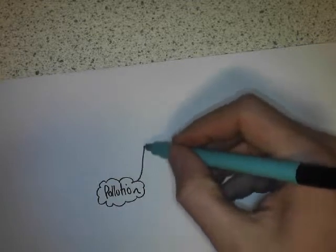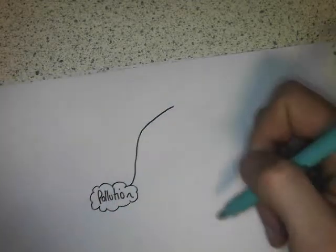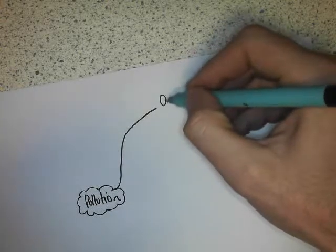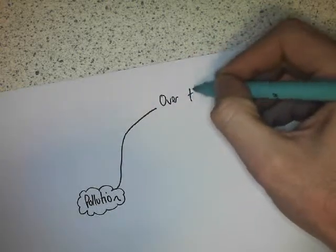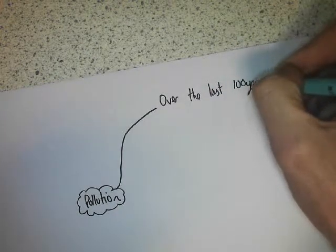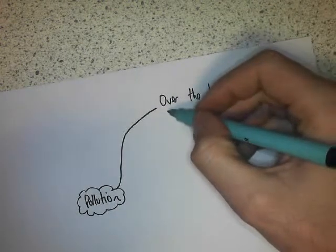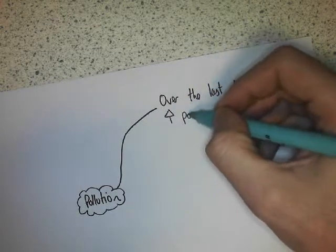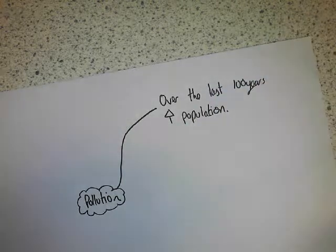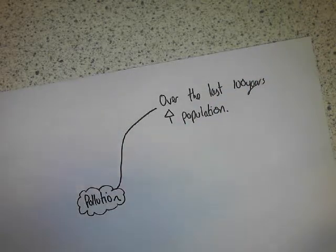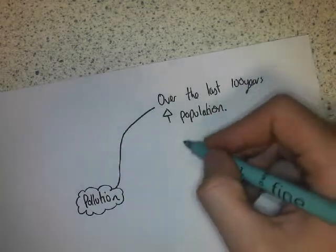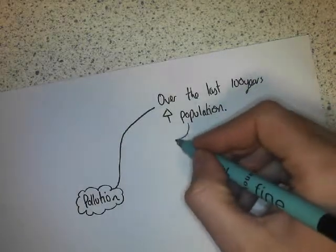On my mind map, I'll put down the fact that over the last hundred years there's been a massive increase in population. And this increase in population has had its own effect on pollution. How has this increase in population affected pollution?